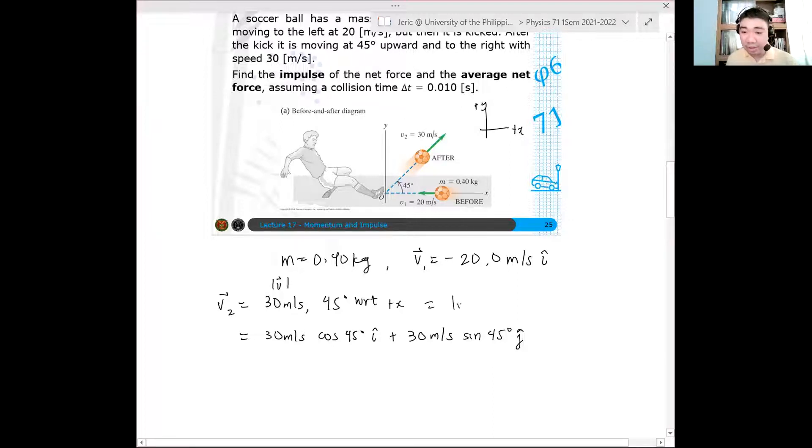This is simply magnitude of V cosine theta i hat plus magnitude of V sine theta j hat. Okay, that's how it works.